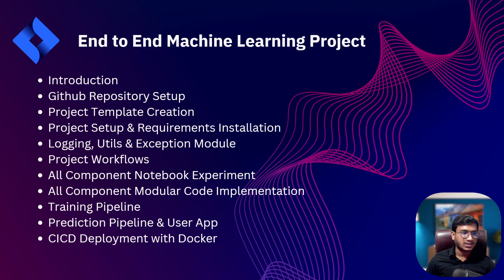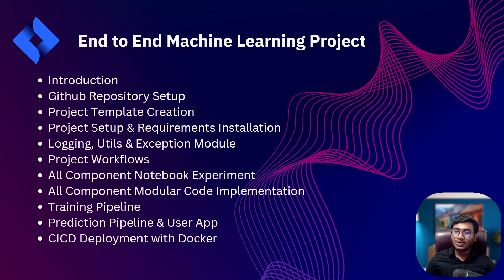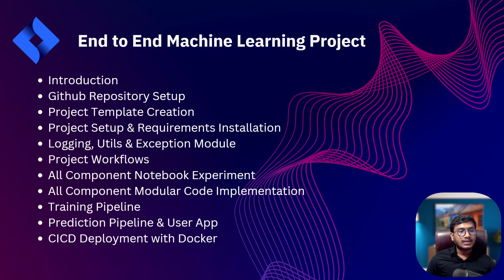Then we'll start with the logging utility and exception module. These modules help you debug your code going forward. We always need to write logging functionality in our code, as well as utility functions that provide code reusability — you can use the same function again and again. We'll also use an exception module, because in any project there will be exceptions and we need to handle them properly.